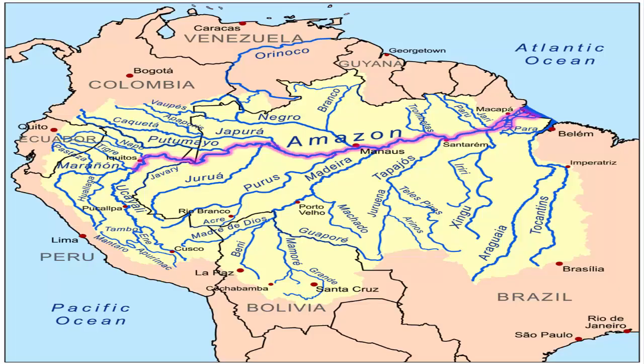Now let's have a look at the flow of the river Amazon. It originates from the Andes mountains in the west, goes all the way through Brazil, and drains into the Atlantic Ocean on the eastern side.